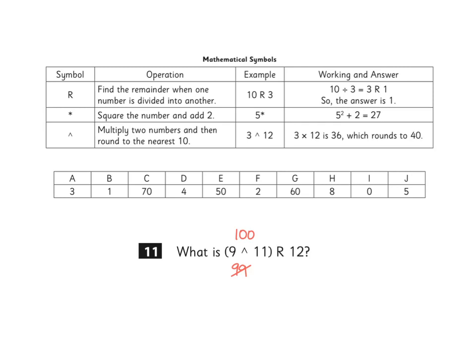The second part of the calculation uses R12. When we have R, it means find the remainder when one number is divided into another. It means that we're going to divide twelve into one hundred. In other words, one hundred divided by twelve.